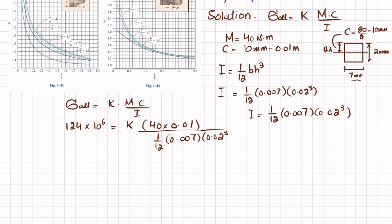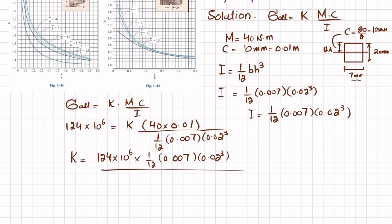Solving for k: k equals 124 × 10⁶ × (1/12) × 0.007 × (0.02)³ divided by (40 × 0.01). Calculating this gives k equal to 1.45.